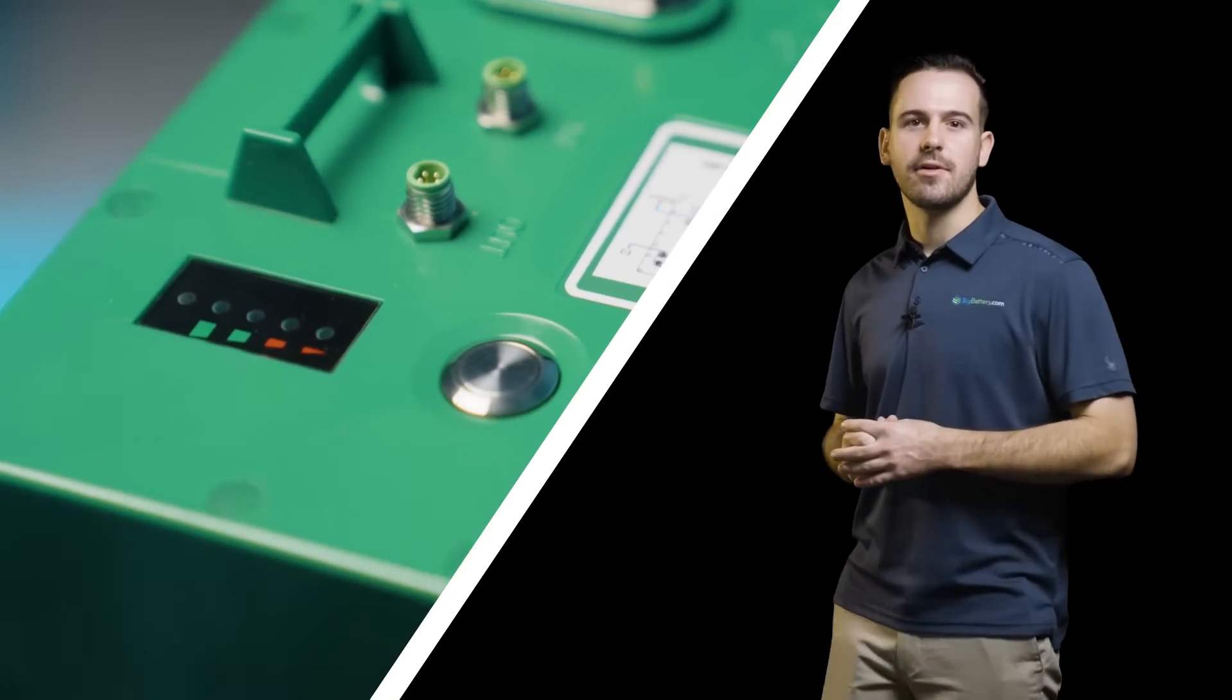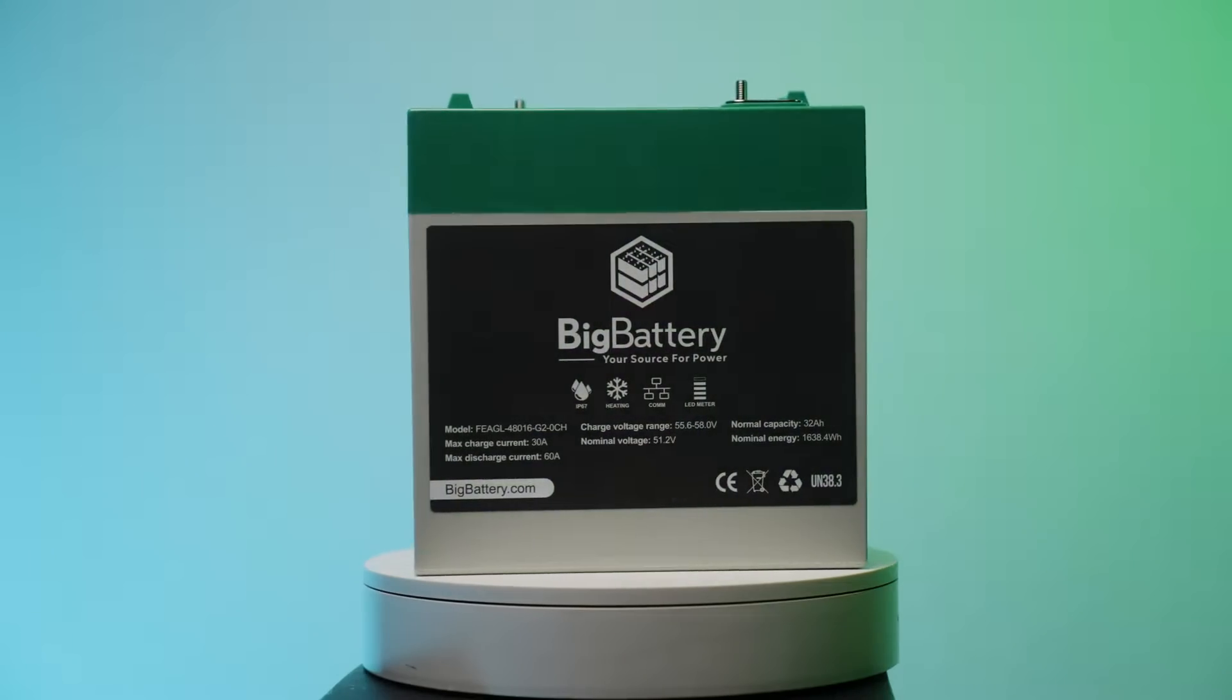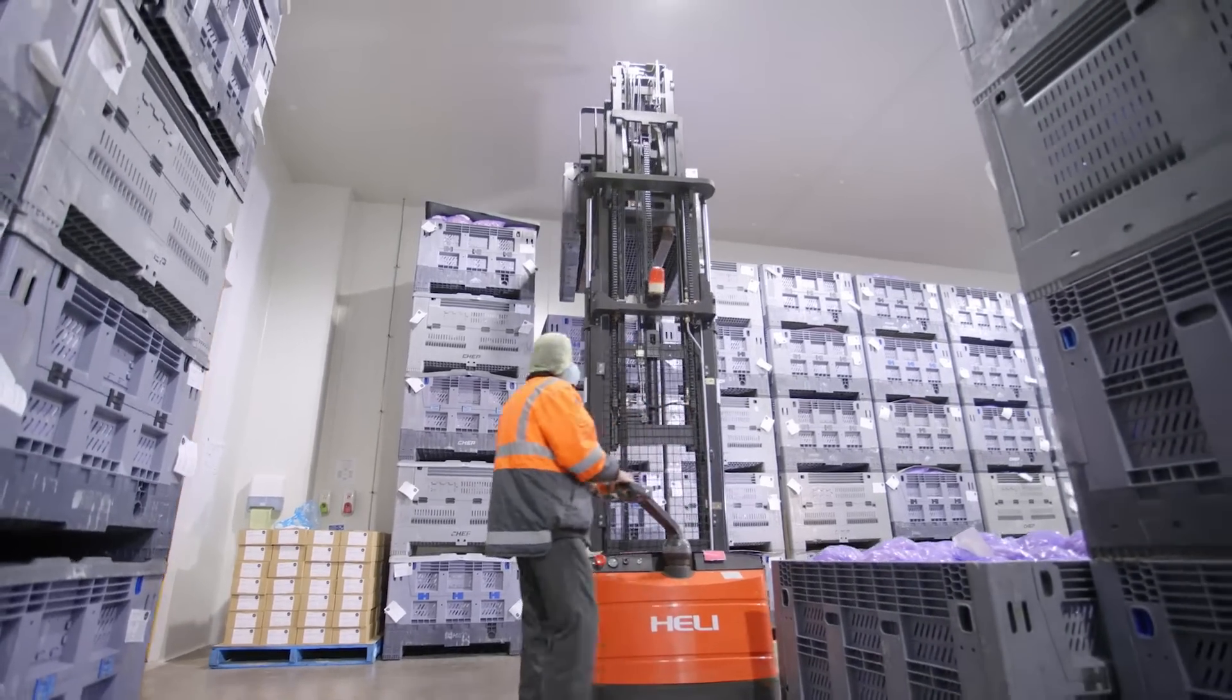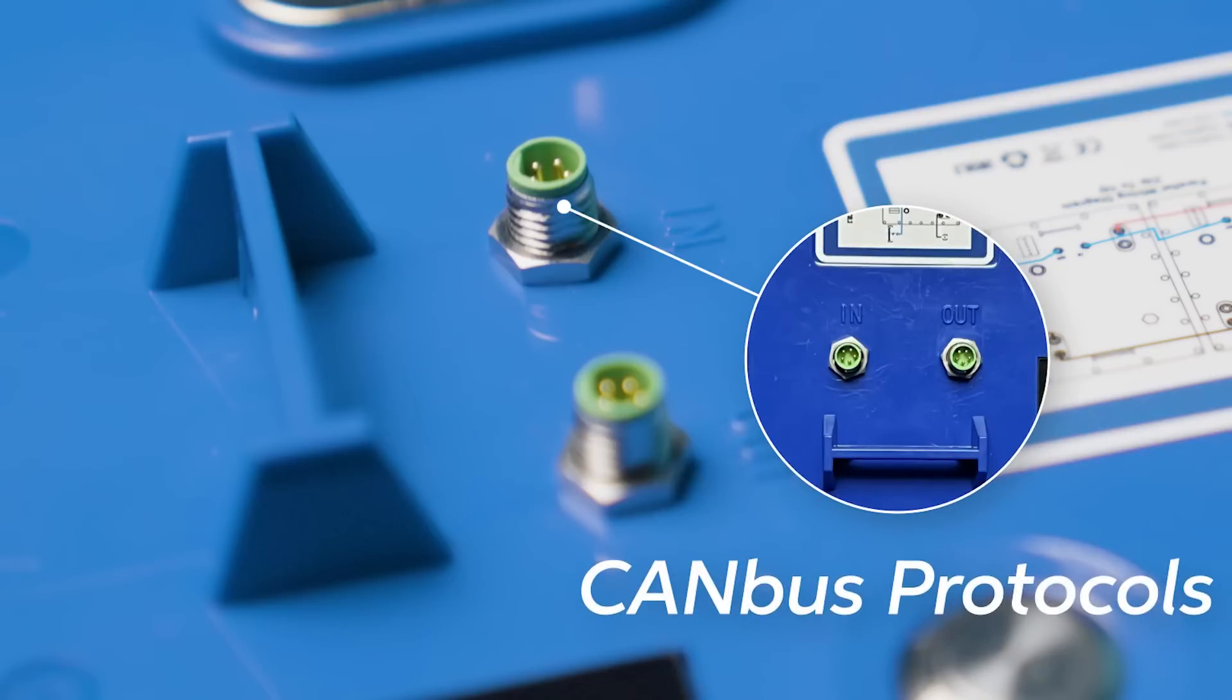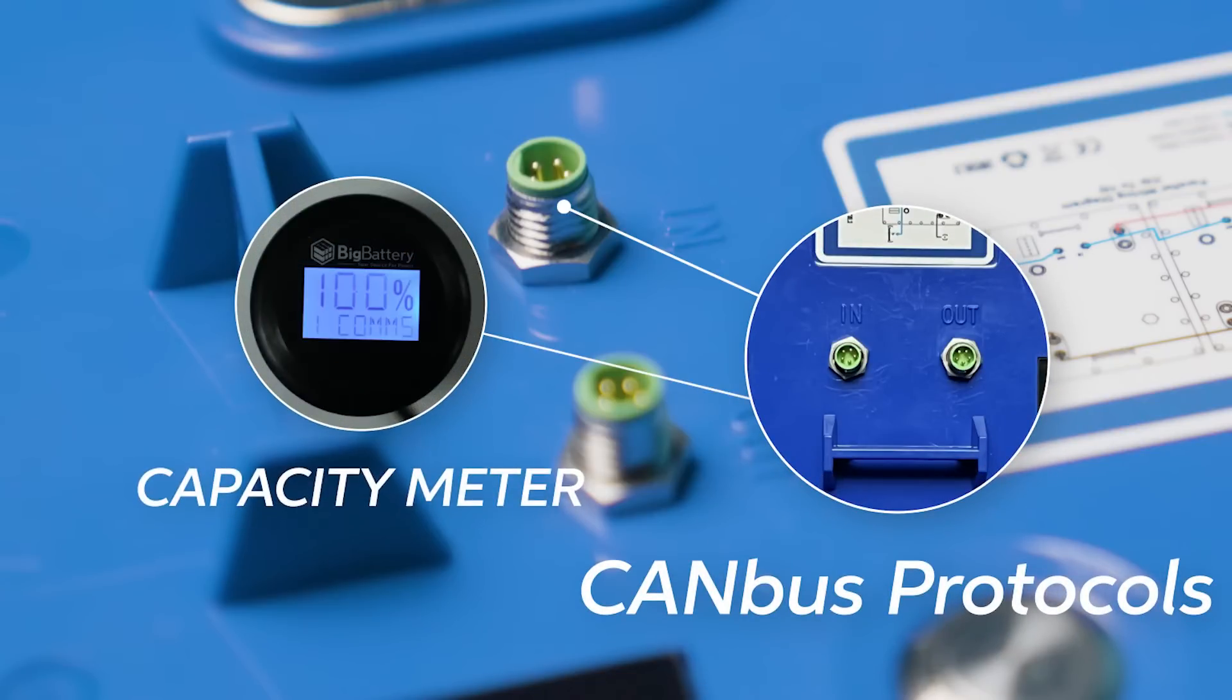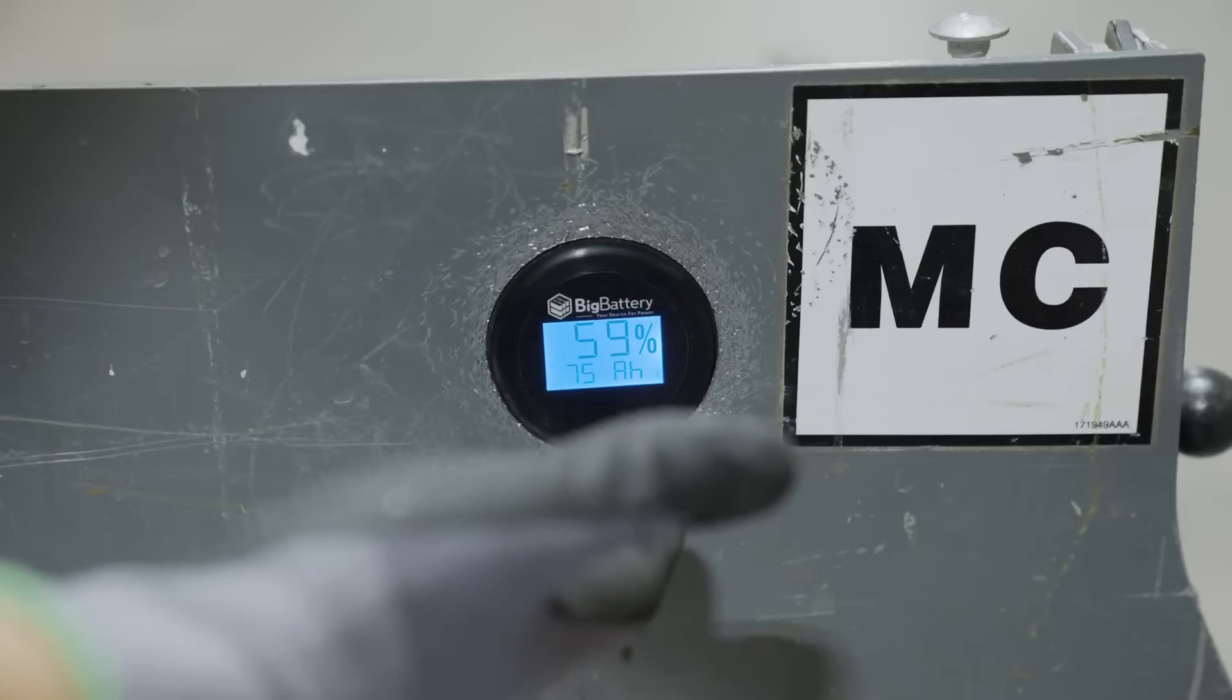Complete with an LED state of charge indicator on the top of the unit, you can conveniently monitor your batteries with ease, ensuring your equipment never goes without power. In addition, the Eagle II comes standard with CAN bus communication protocols, and pairing it with our Big Battery capacity meter allows you to get the most accurate readings on your battery's status and performance.